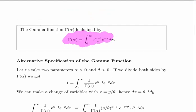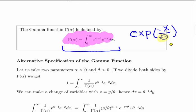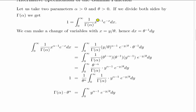We need to make an extension of the Gamma function expression so we can use it with the probability density function, which involves minus x over theta. There's an alternative specification for the Gamma function. Starting from the definition and dividing both sides by the Gamma function of alpha, we get 1 equals the integral from 0 to infinity of 1 over gamma(alpha) times x to the power of alpha minus 1 times e to the minus x dx.